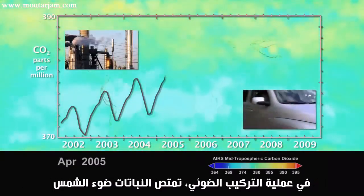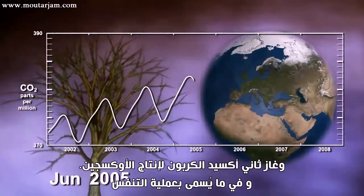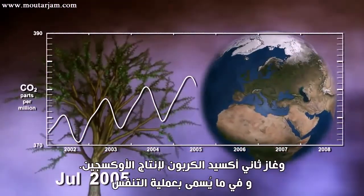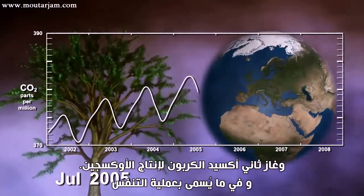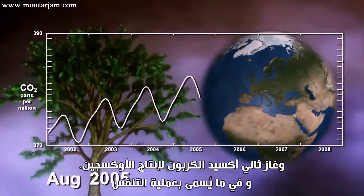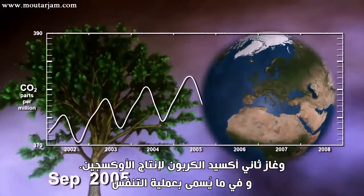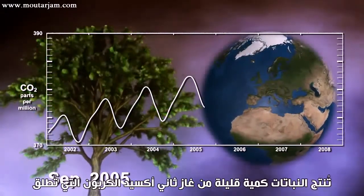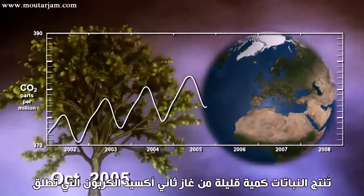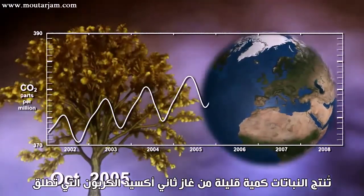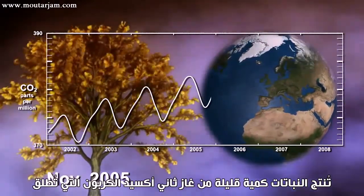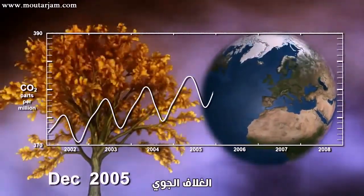In photosynthesis, plants absorb sunlight and carbon dioxide to make oxygen. And in what's known as respiration, plants produce small amounts of carbon dioxide that is released back into the atmosphere.